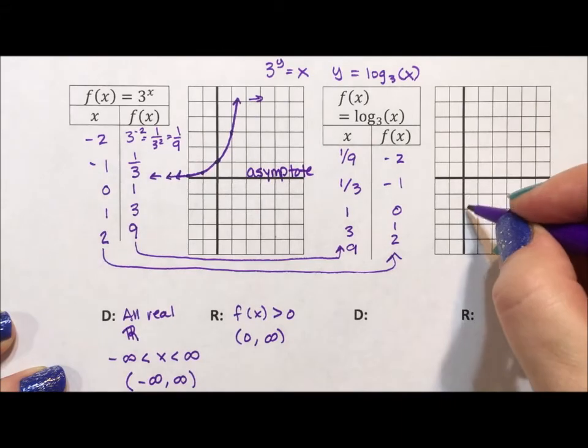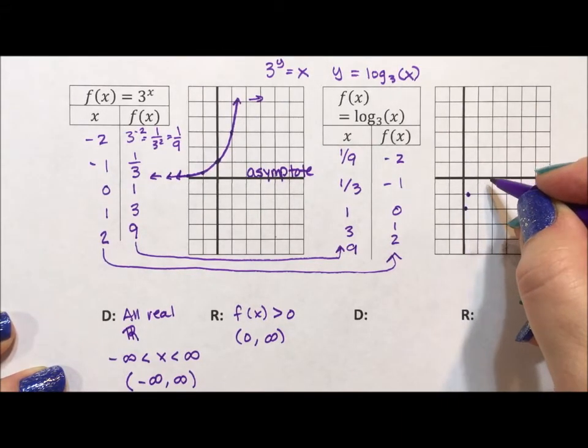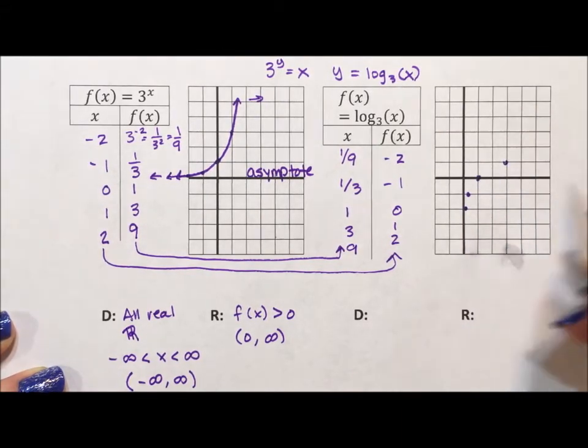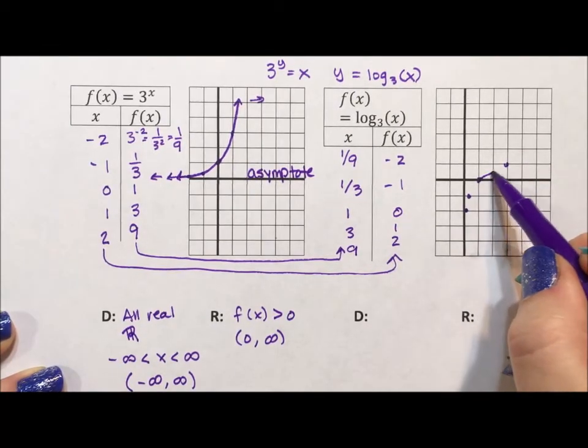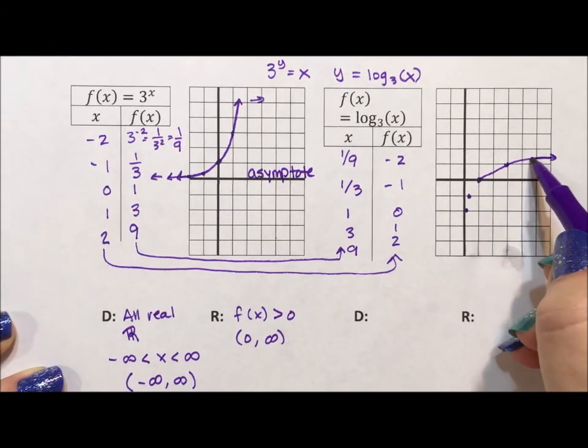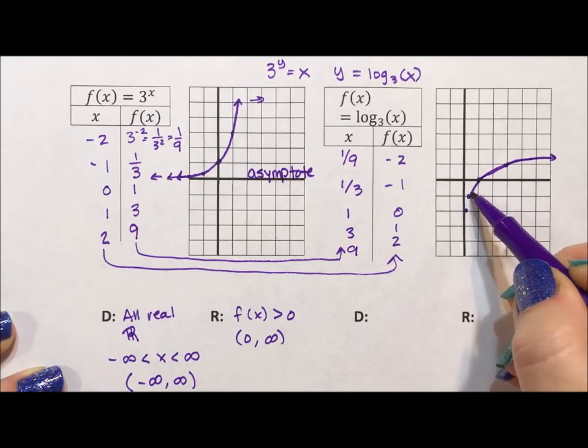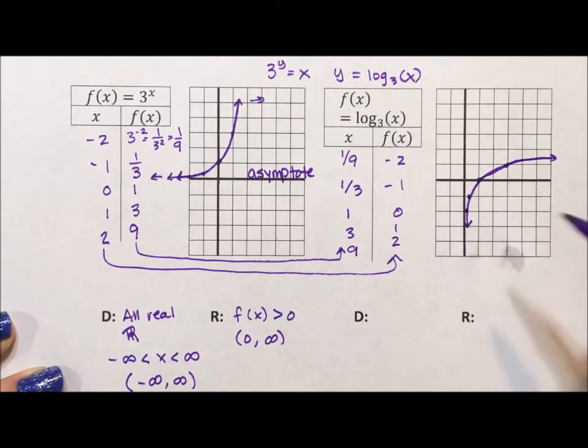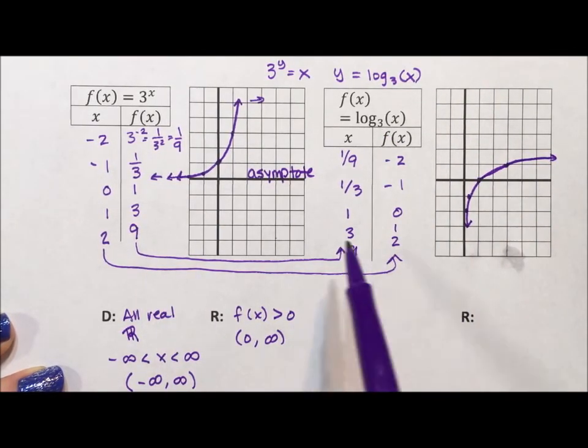So one ninth, negative two, one third, negative one, one, zero, three, one. Again, nine is outside the scope of the graph. That's okay. We just need a nice curve, nice continuous curve. And now we have the graph of log base three of x. The beauty of this inverse is, because x becomes y...